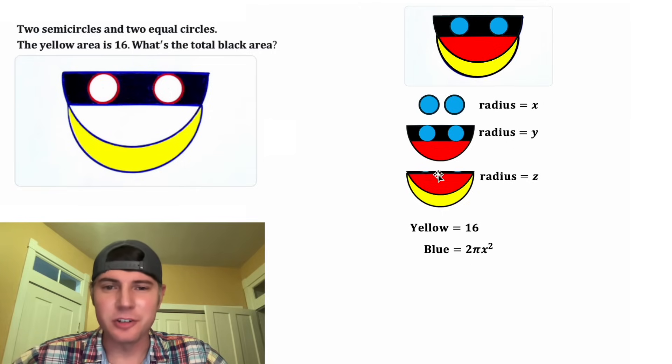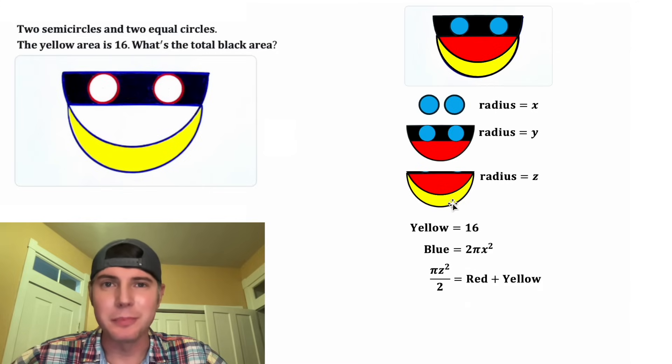Next, let's do this semi-circle right here. The area is gonna be pi Z squared divided by two because a semi-circle is half of a circle. And the area of this semi-circle is gonna be equal to red plus yellow. And we know the yellow is equal to 16, so let's update this yellow to be 16.